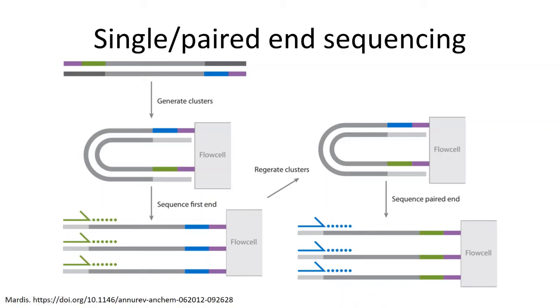There are different reasons to sequence either single end or paired end. Single end is generally going to be more efficient. It's going to get you better read depth for the amount of money and reagents and time that you're using for your sequencing experiment.